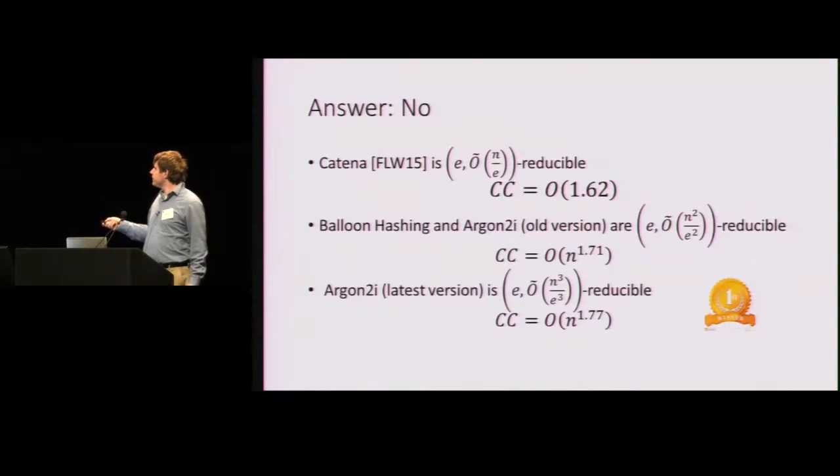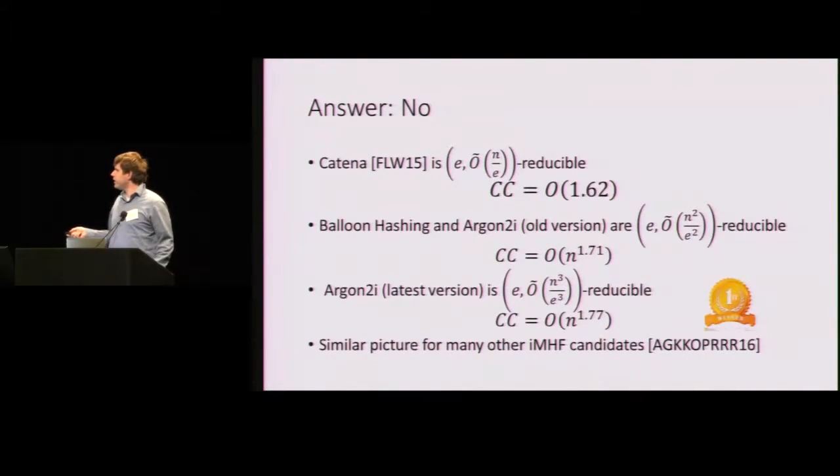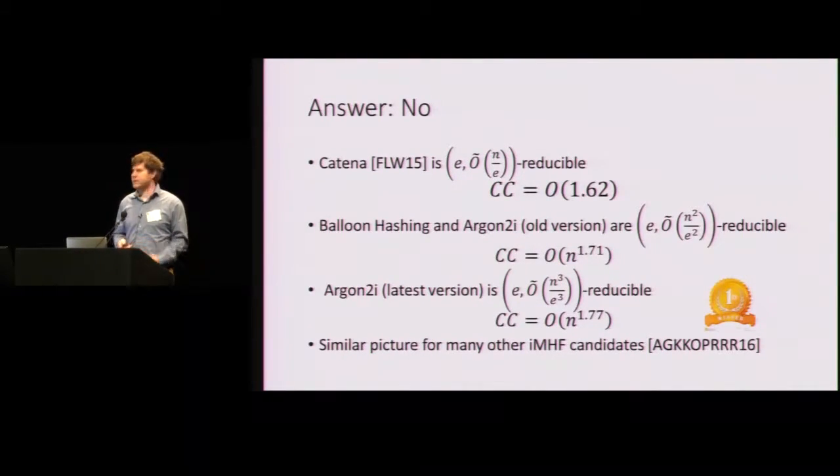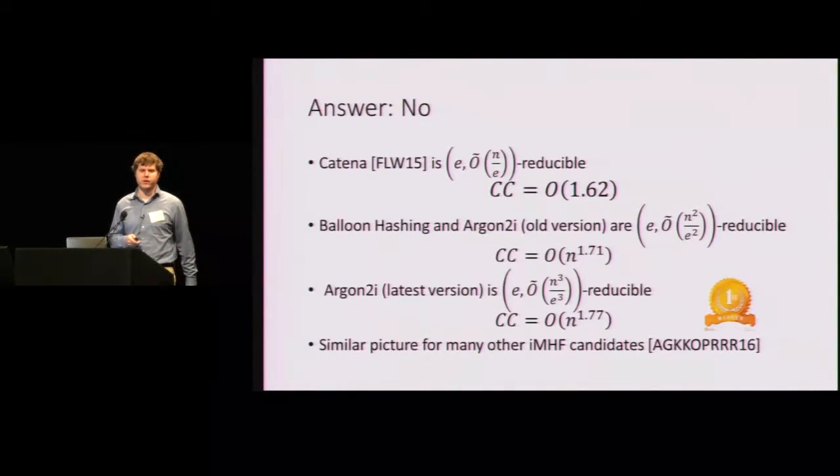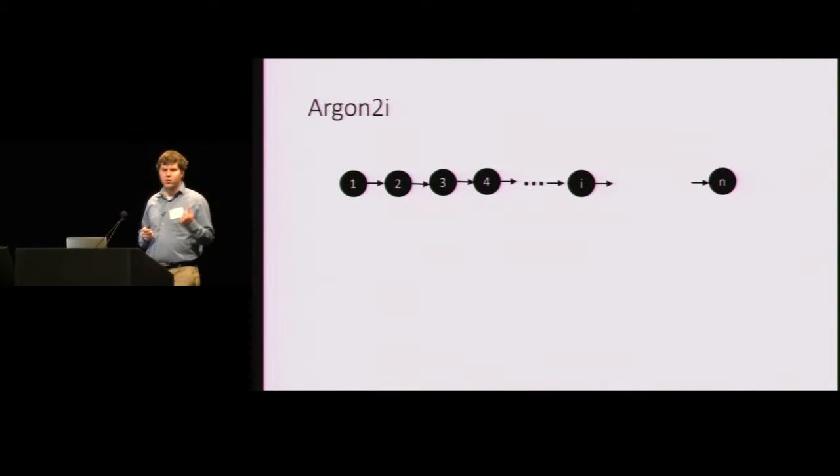In any case, none of these are close to N squared, which is what we ideally want. And, of course, the same general techniques apply to a host of other IMHF candidates. So there's some other follow-up work looking at Pomelo and other variants from the password hashing competition. But let me focus on Argon2i since it's the winner of the password hashing competition.